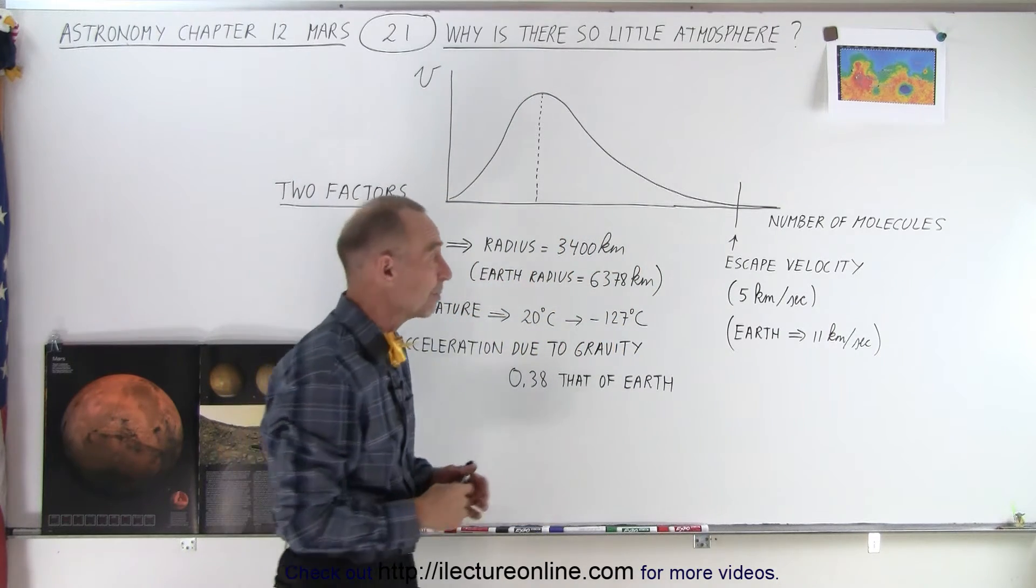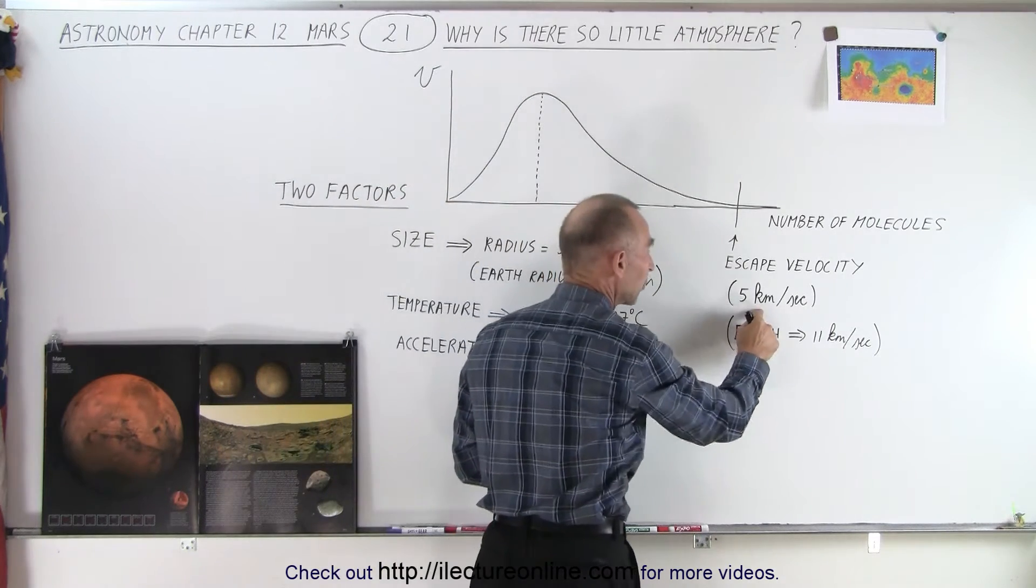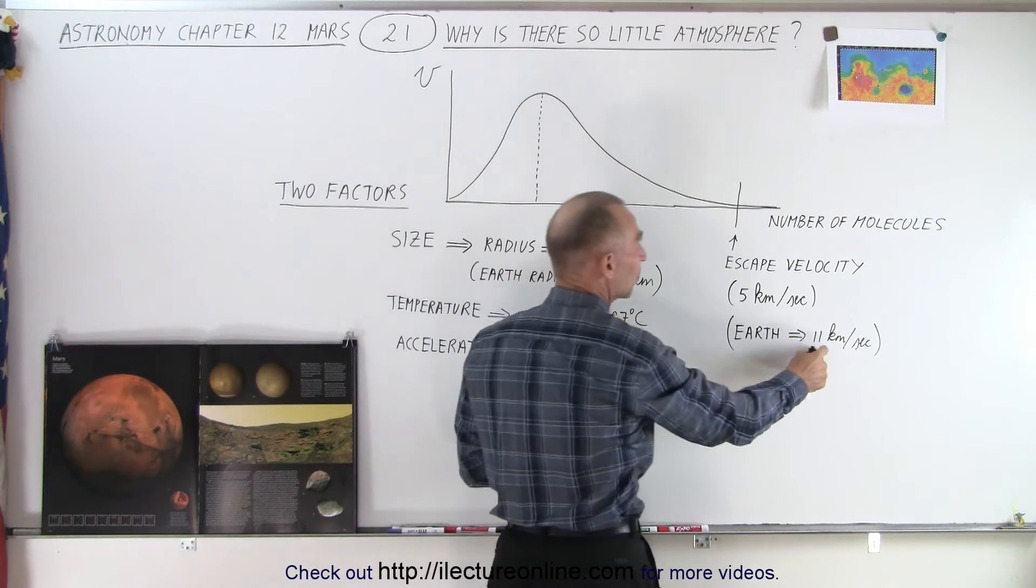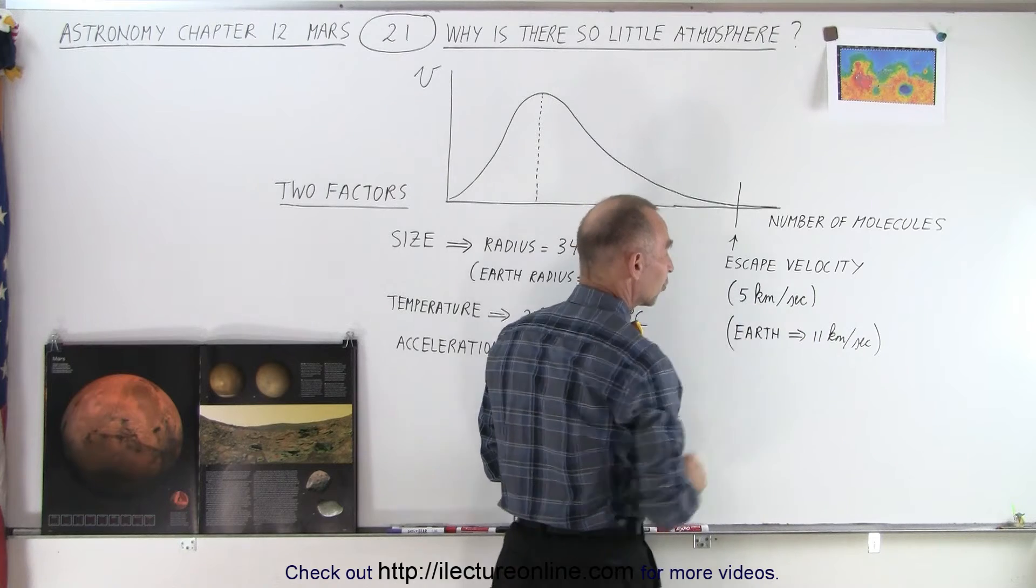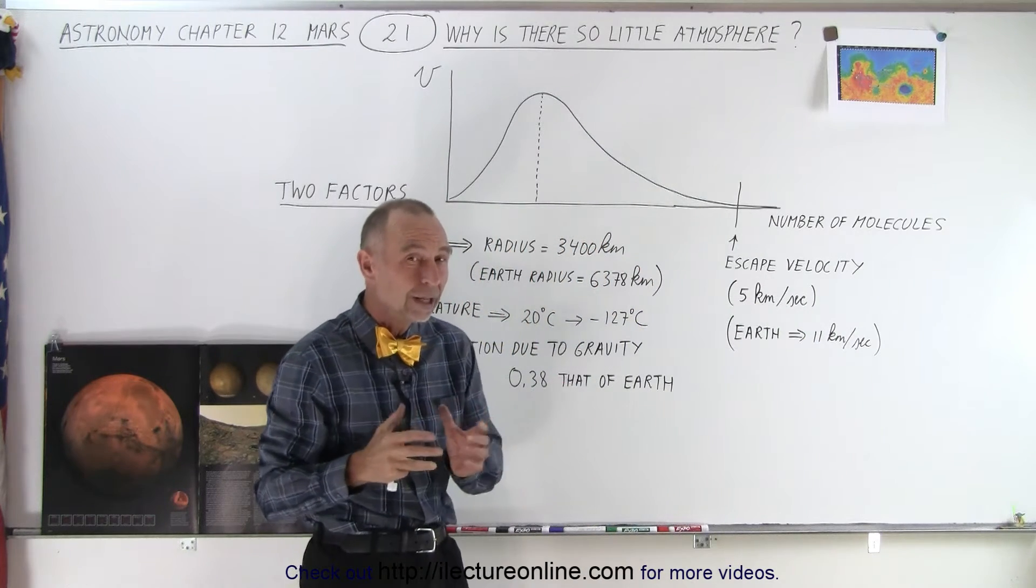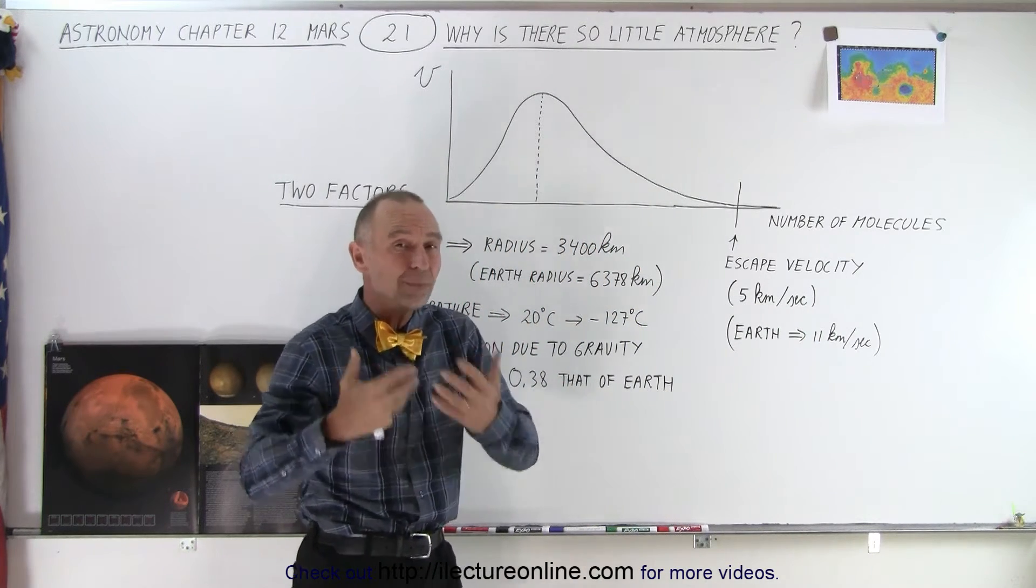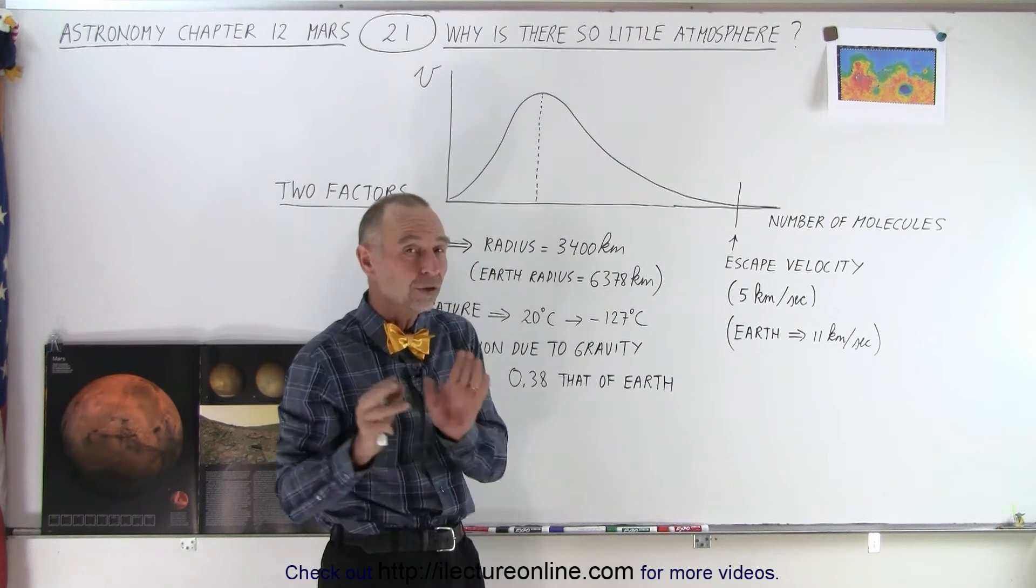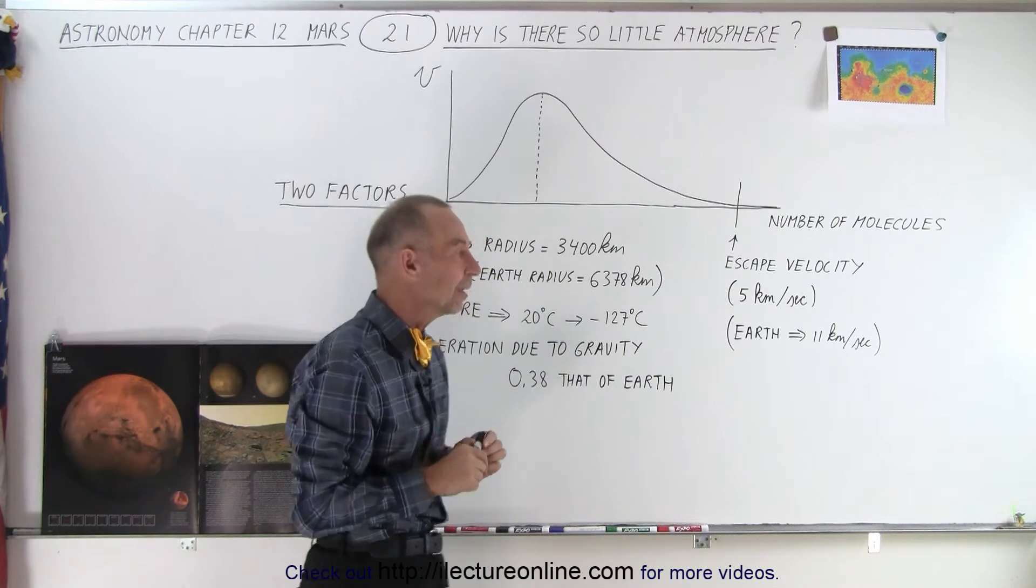In this case, the escape velocity of Mars is about 5 kilometers per second, which is about 3 miles per second. And for the Earth, it's 11 kilometers per second, which is more than twice as much. So therefore, the molecules don't need as much speed to get away from Mars because the escape velocity is smaller, so they're more likely to reach that escape velocity.